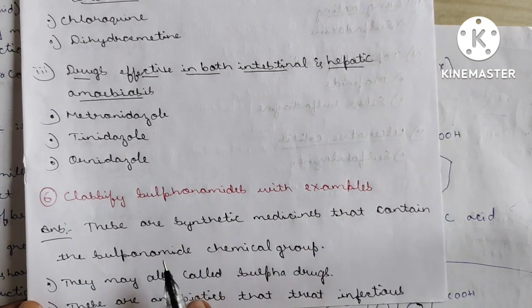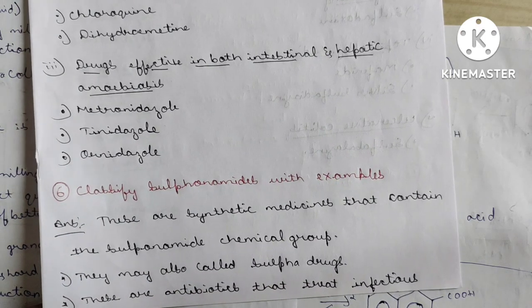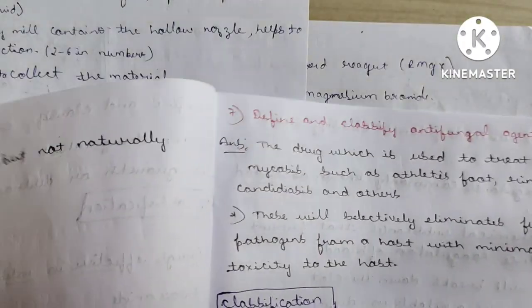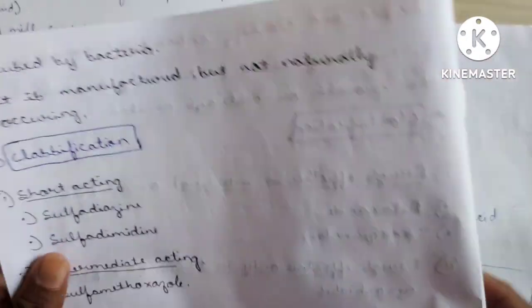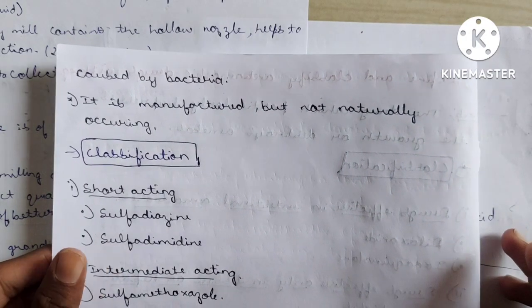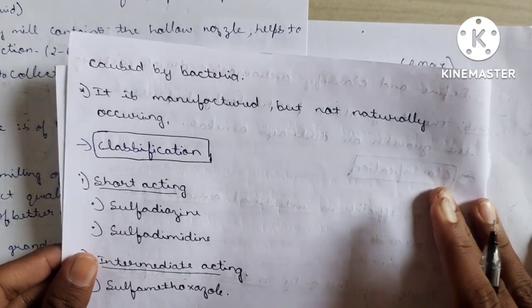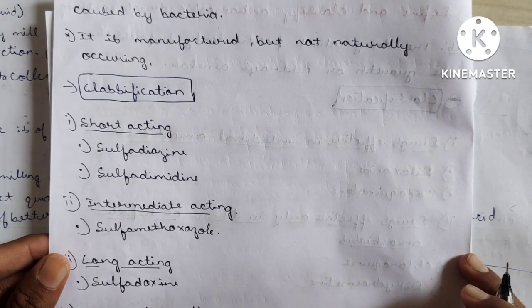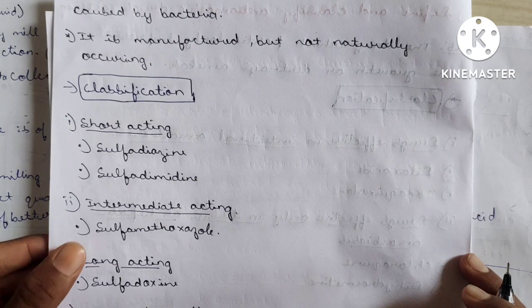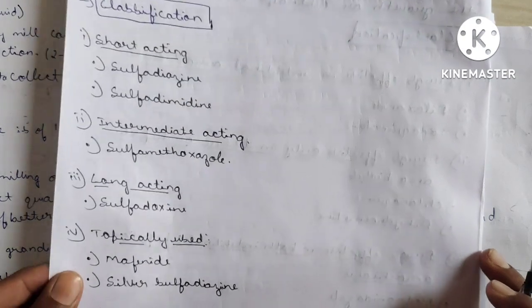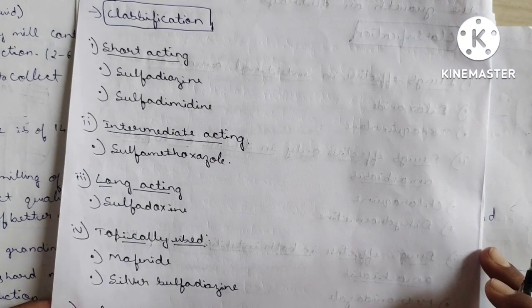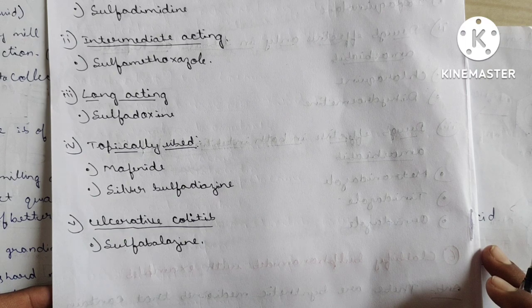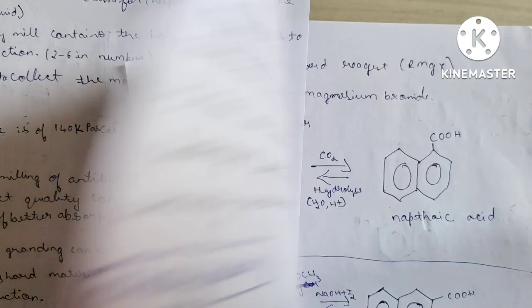Drugs effective in both intestinal and hepatic amoebiasis — metronidazole, tinidazole, and ornidazole. Question 6: Classify sulfonamides with examples. Sulfonamides are synthetic medicines containing the sulfonamide chemical group, also called sulfa drugs. They are antibiotics that treat bacterial infections. Classification: Short-acting — sulfadiazine, sulfadimidine. Intermediate-acting — sulfamethoxazole. Long-acting — sulfadoxine. Topically used — mafenide. Ulcerative colitis — sulfasalazine.